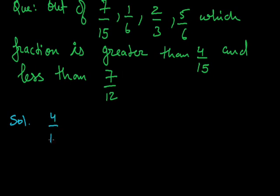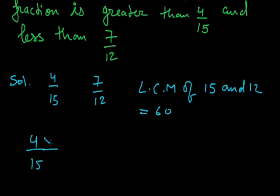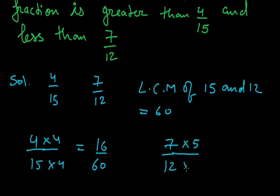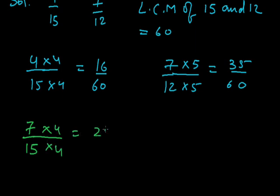First I will convert 4 by 15 and 7 by 12 into like fractions. To convert these two into like fractions, I will have to find the LCM of 15 and 12, that will be equal to 60. Now, 4 by 15 will be multiplied by 4, numerator and denominator, so we will get 16 upon 60. And 7 by 12 will be multiplied by 5, numerator and denominator both, so we will get 35 by 60. Now, I will convert 7 by 15 also with the denominator 60, so I will multiply it by 4. It will be equal to 28 by 60.